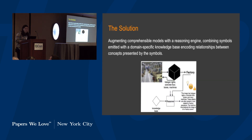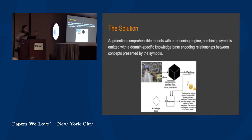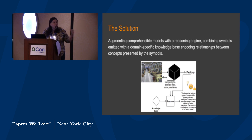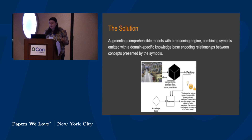How do they propose to solve this? They propose augmenting existing comprehensible models with a reasoning engine attached to a domain-specific knowledge base. For example, in the factory scenario, instead of just listing halogen lights, concrete floors, boxes, and machines, the reasoner goes to the knowledge base — which contains knowledge that a factory floor might contain these things with certain levels of certainty — and produces: 'The image has halogen lights, concrete floor, boxes, and many machines. These objects are often present in and related to factory operations. The machine thus believes the image is of a factory scene.'